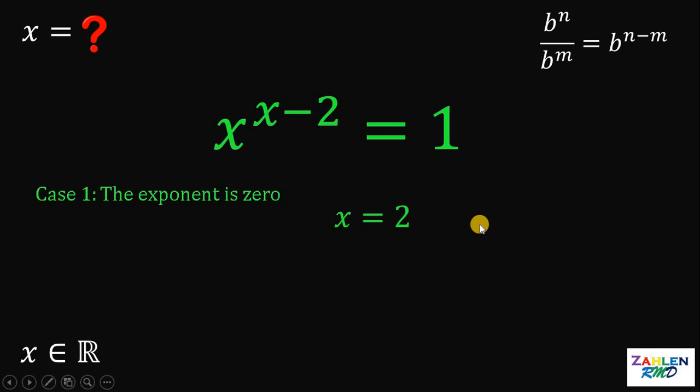The second case is when the base equals 1. In this equation, if x equals 1, 1 raised to any number is just 1. Therefore, we can say that x must be equal to 1.